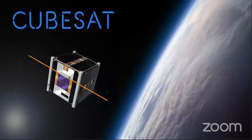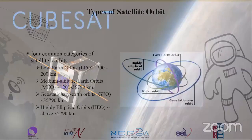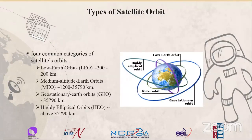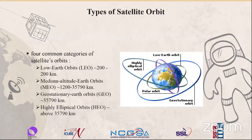Now let's discuss CubeSats. Before discussing CubeSats, let's discuss the types of satellite orbits. There are four common categories of satellite orbits classified by altitude. First is low Earth orbit, at altitudes between 200 and 1,200 kilometers. Second is medium altitude Earth orbit, at altitudes between 1,200 and 35,000 kilometers. Then we have geostationary Earth orbit, which is more than 35,000 kilometers above. And finally, highly elliptical orbits, which are also above 35,000 kilometers.